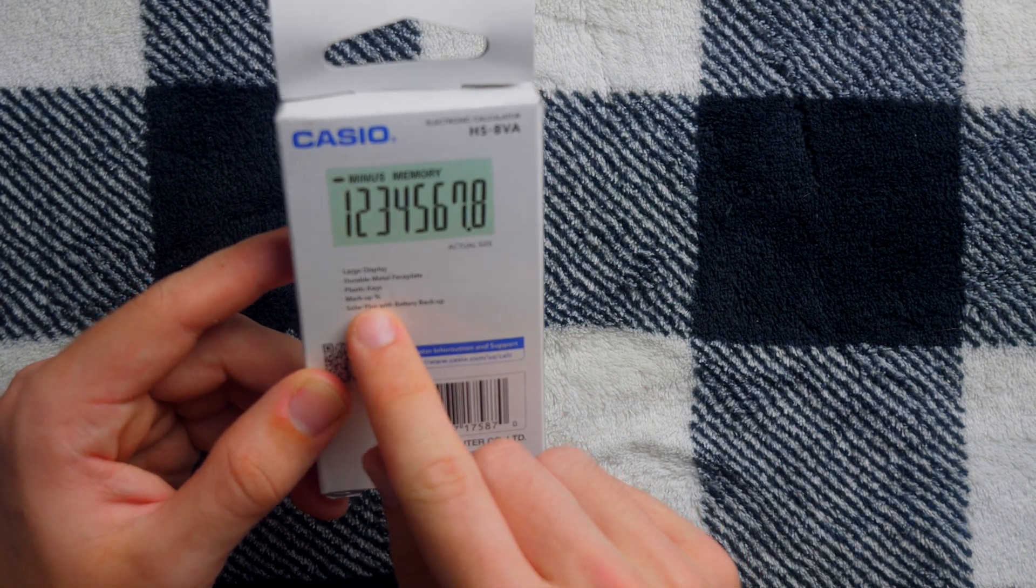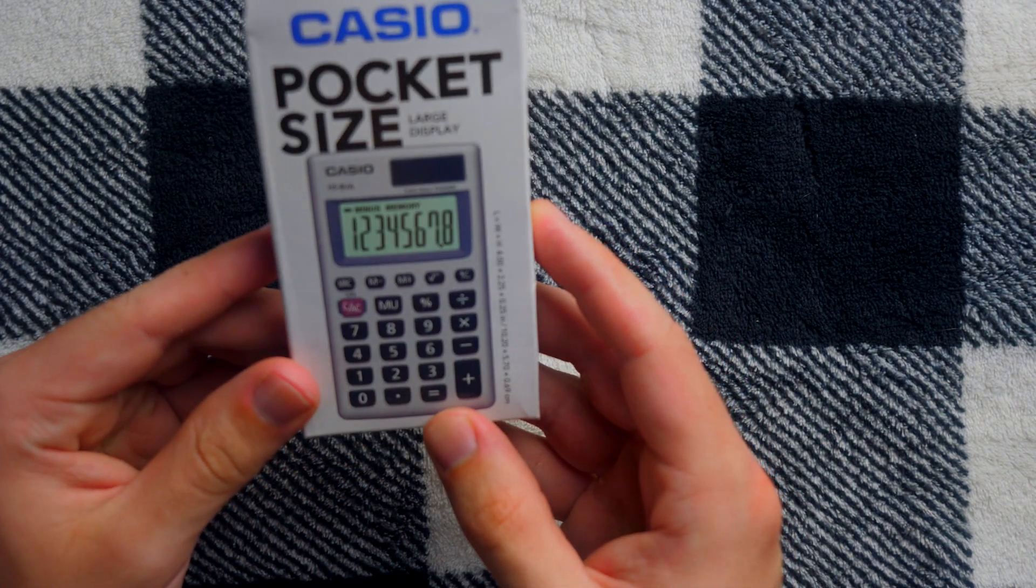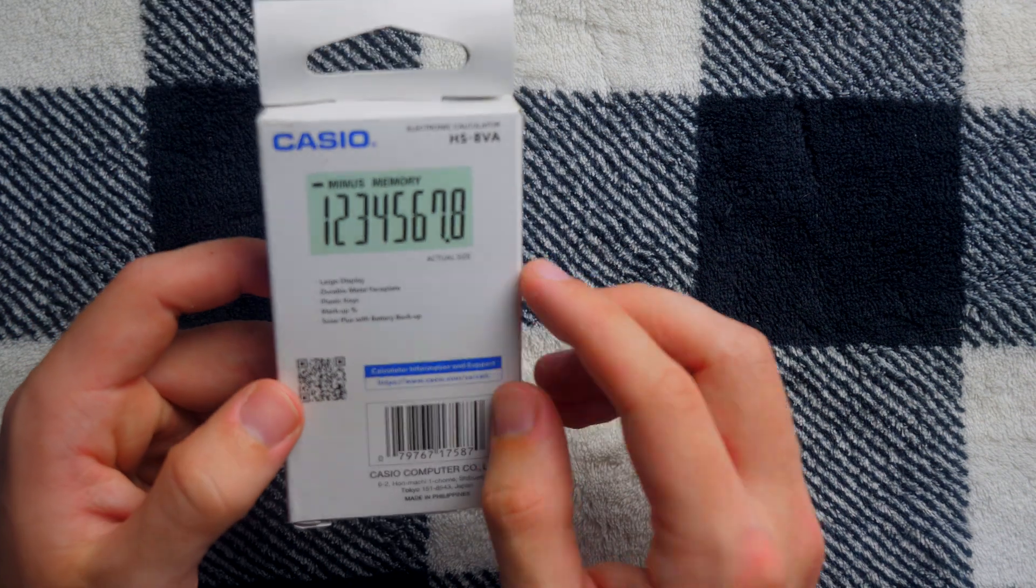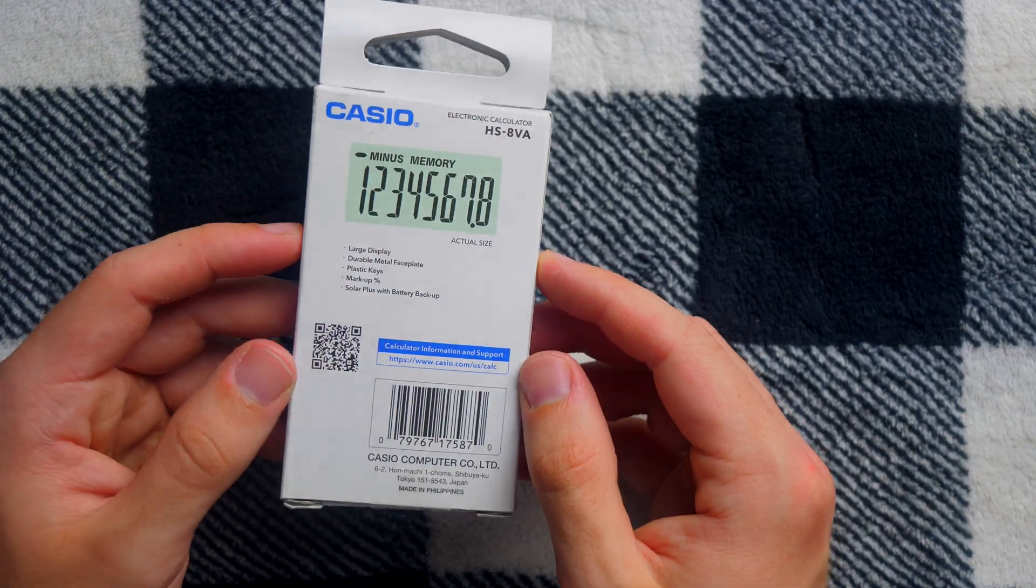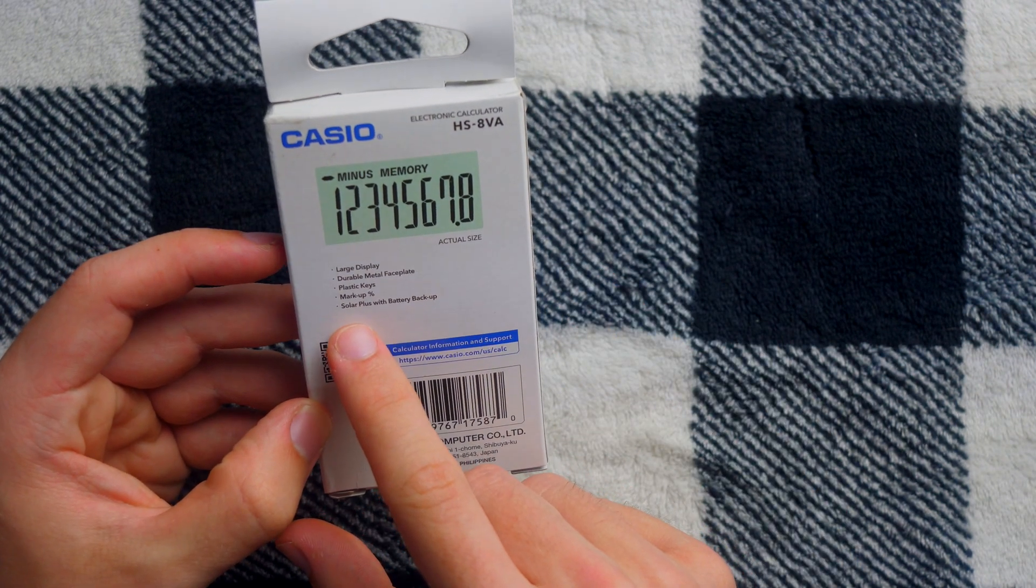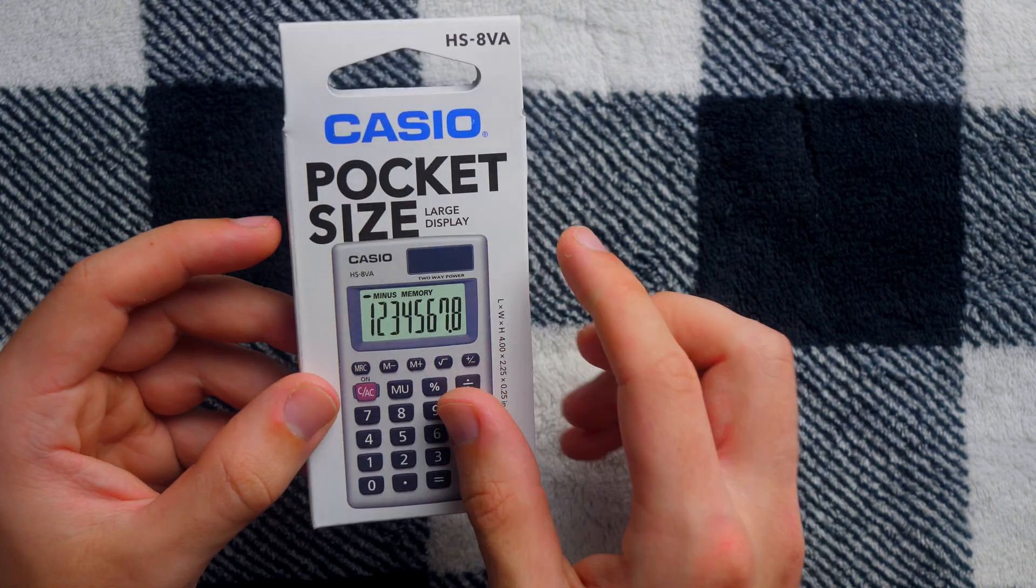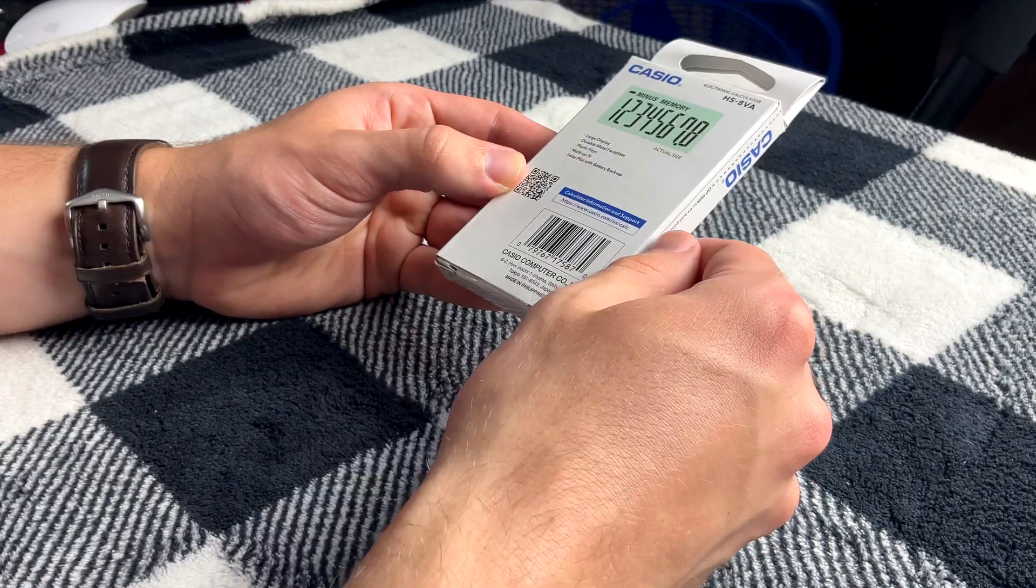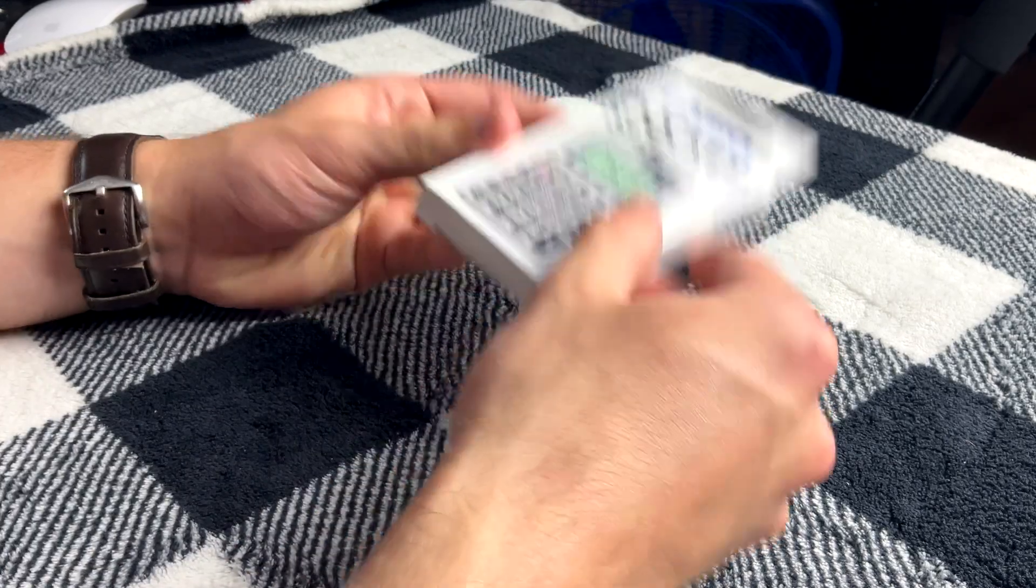Markup percent. That's the percent key it's bragging about, right? Those are pretty slick, percent keys, even though they're not super useful if you're mathematically literate. And then it's got the solar plus. I don't know what it means by solar plus, just solar, solar cells there with battery backup. Very plain calculator.